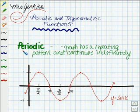Let's start by defining a function that's periodic. If a function is periodic, it's easiest to see it by looking at its graph, because it'll have a graph that is a repeating pattern and it continues indefinitely. One such example of this type of periodic function is the sine curve, y equals the sine of x, so the sine function would be a periodic function.